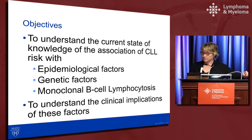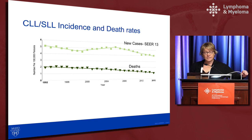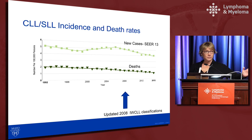Starting with the basic epidemiology of CLL: from the SEER cancer registry, the incidence of CLL has been fairly stable from 1992 to 2008, at about five newly incident CLL cases per year per 100,000 individuals. Only in 2008 do you start seeing a change in incidence, due to the change of the criteria for CLL, which incorporated the absolute B-cell count rather than the absolute lymphocyte count.